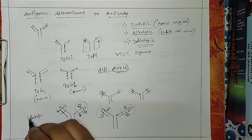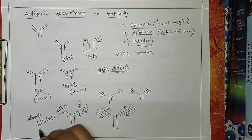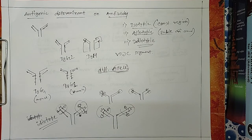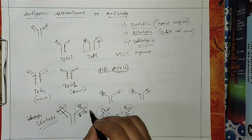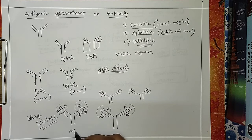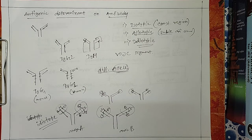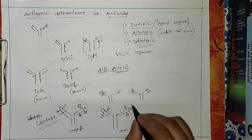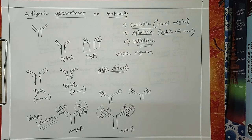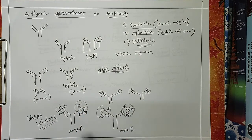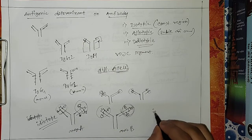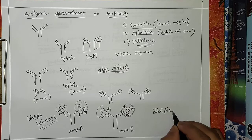Suppose you have the same type of antibody, but they are raised against different types of antigen — suppose one is for antigen A and the other is for antigen B. They will have different antigenic determinants on their variable region. If you have differences in the variable region due to the antigenic determinants, these relationships are called idiotypic.